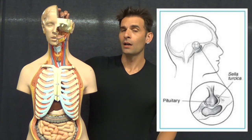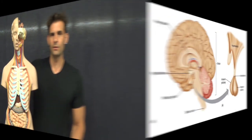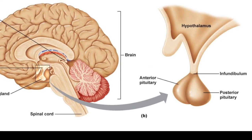In this series of videos we're going to be discussing the endocrine system, its glands, and selected hormones. The first one we're going to be talking about is the pituitary gland. The pituitary gland is located in the sella turcica of the sphenoid bone, directly connected to the hypothalamus. You can see here the pituitary gland directly connected to the hypothalamus by the infundibulum.